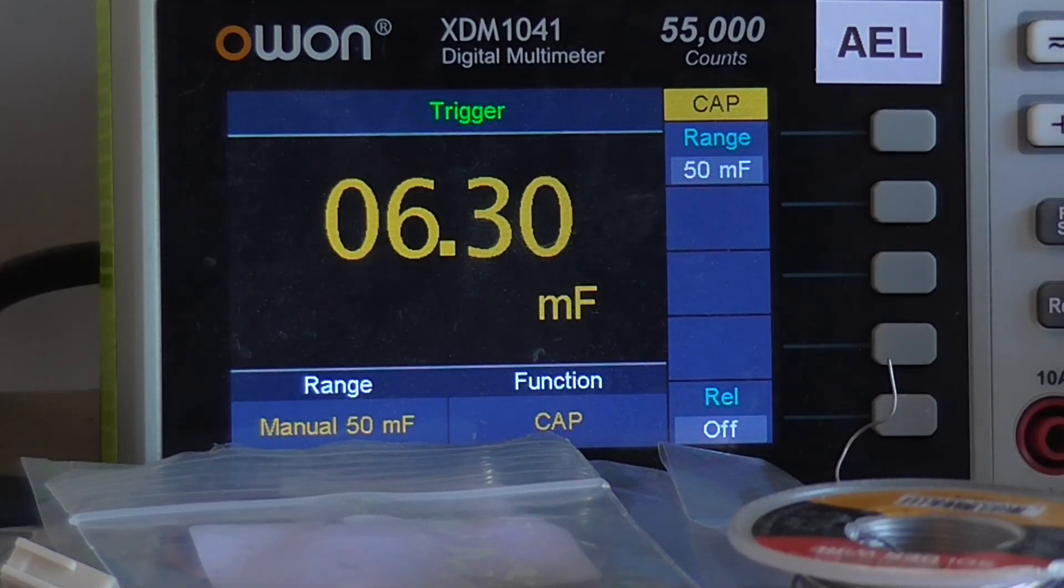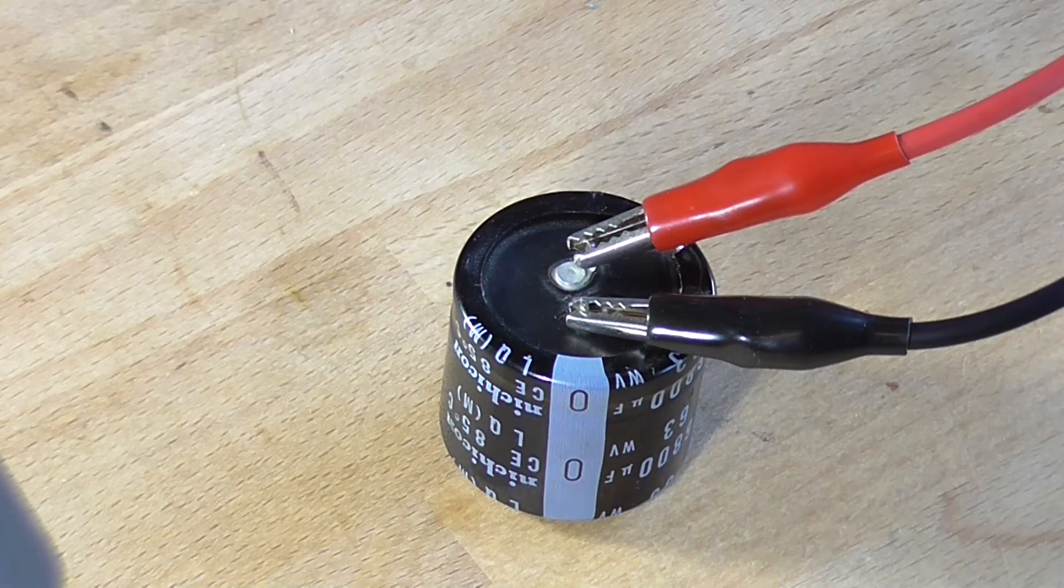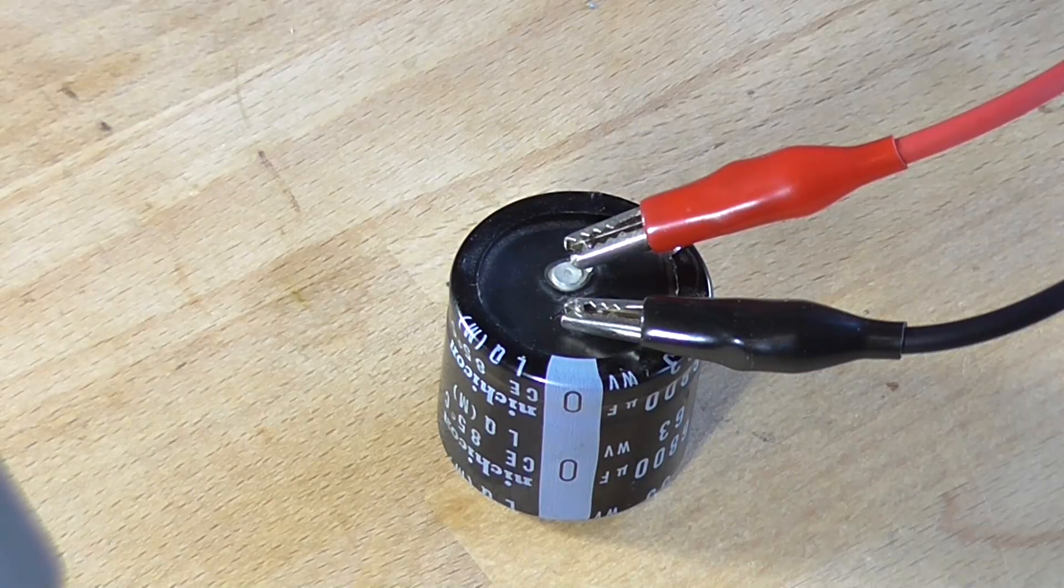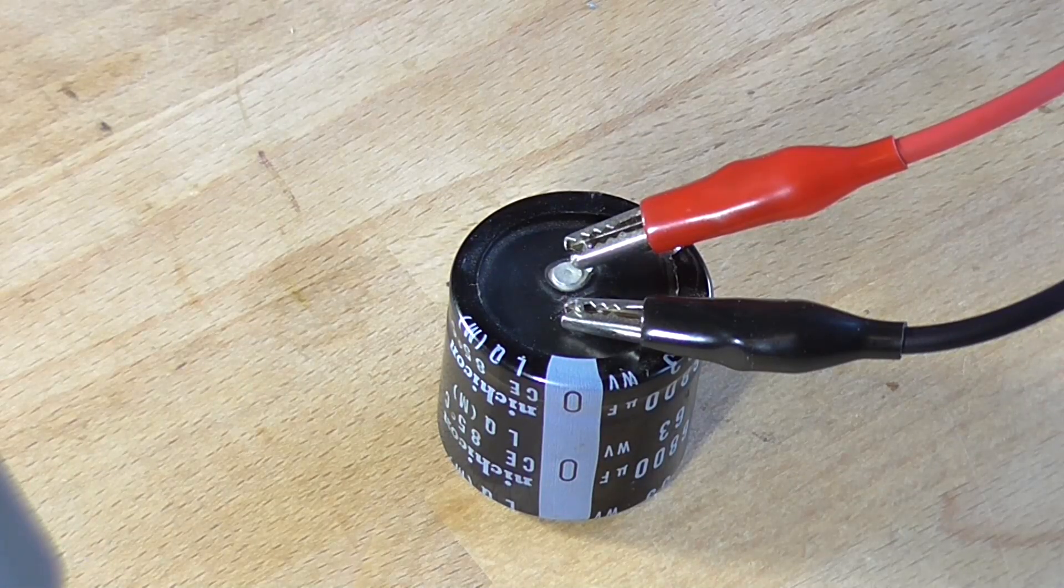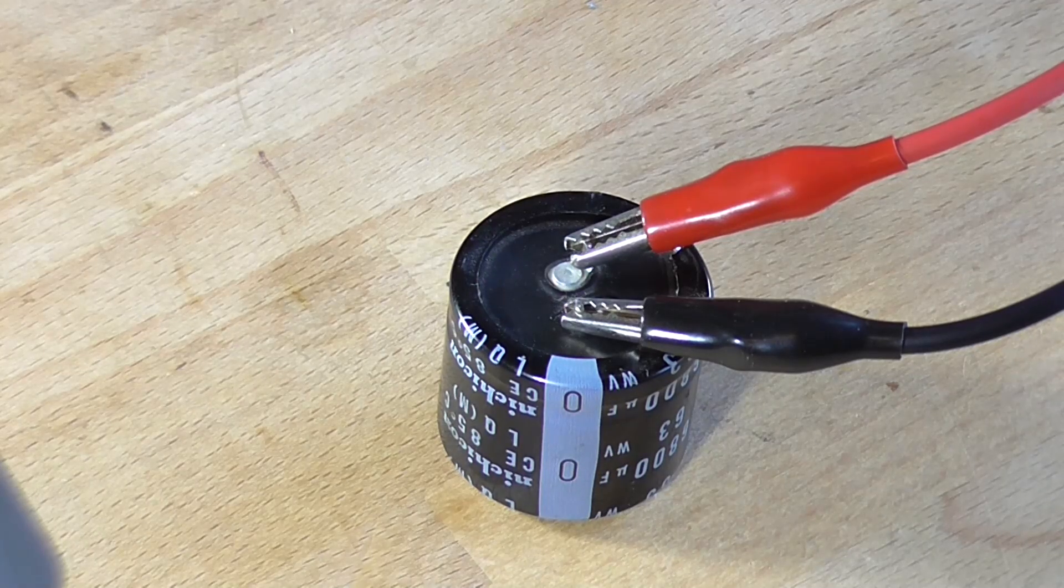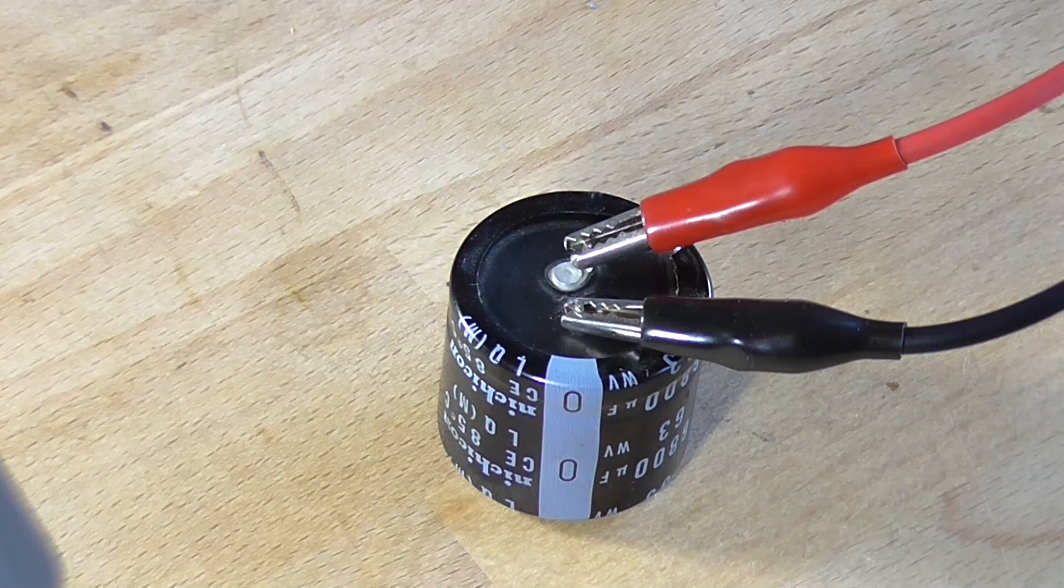We can see that we're looking at 6.29, 6.3, that's going to be millifarad I believe. So that would be equated to 6300 microfarad. So the capacitance is down a little bit. I'm not really sure what the tolerance of these capacitors is, probably around about the 5% mark, which would be right from what I'm seeing because 5% of 6800 is 340, and we've lost about 340 to 400 microfarad as it is.